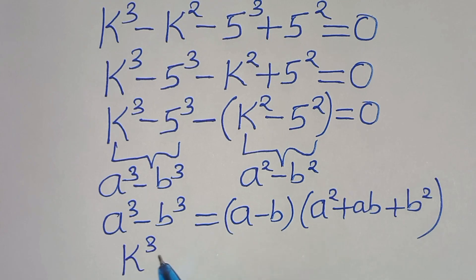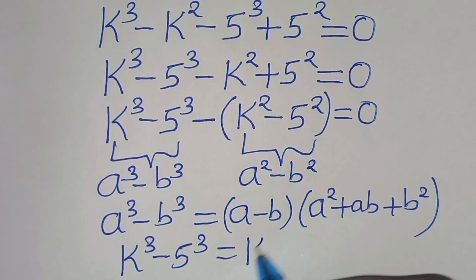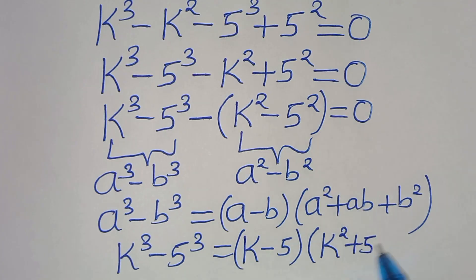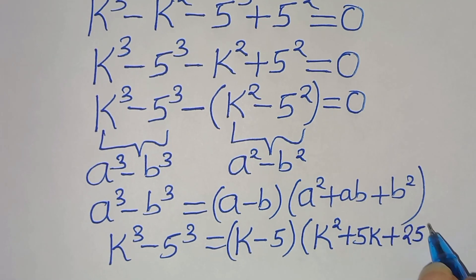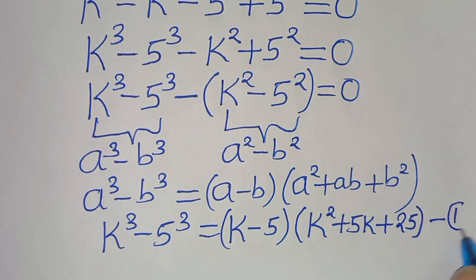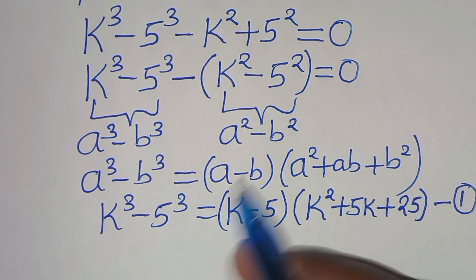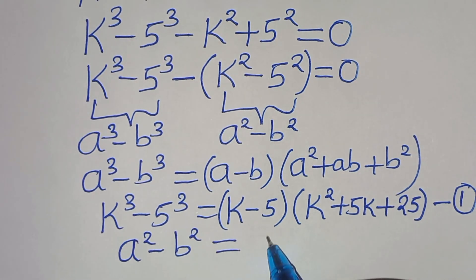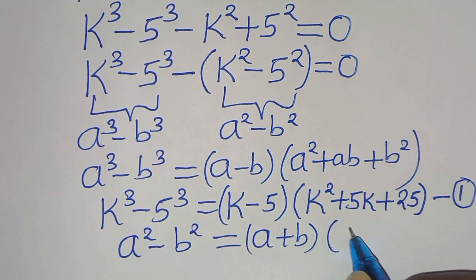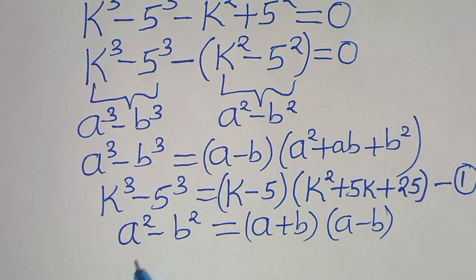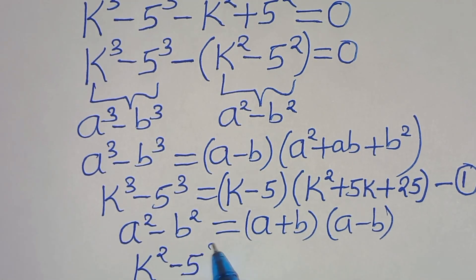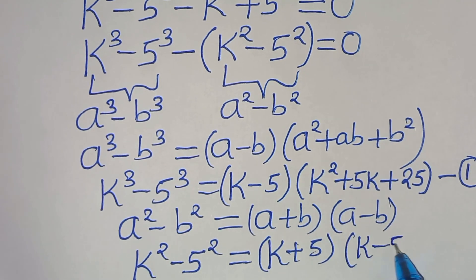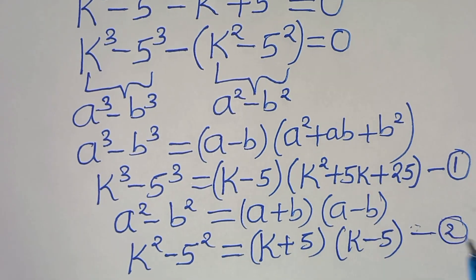Applying this identity, k to the power of 3 minus 5 to the power of 3 is the same thing as (k minus 5)(k squared plus 5k plus 25). Let's call this equation 1. And the second part, the difference of two perfect squares, a squared minus b squared, can be expressed as (a plus b)(a minus b). This implies that k squared minus 5 squared is the same thing as (k plus 5)(k minus 5). Let's call this equation 2.